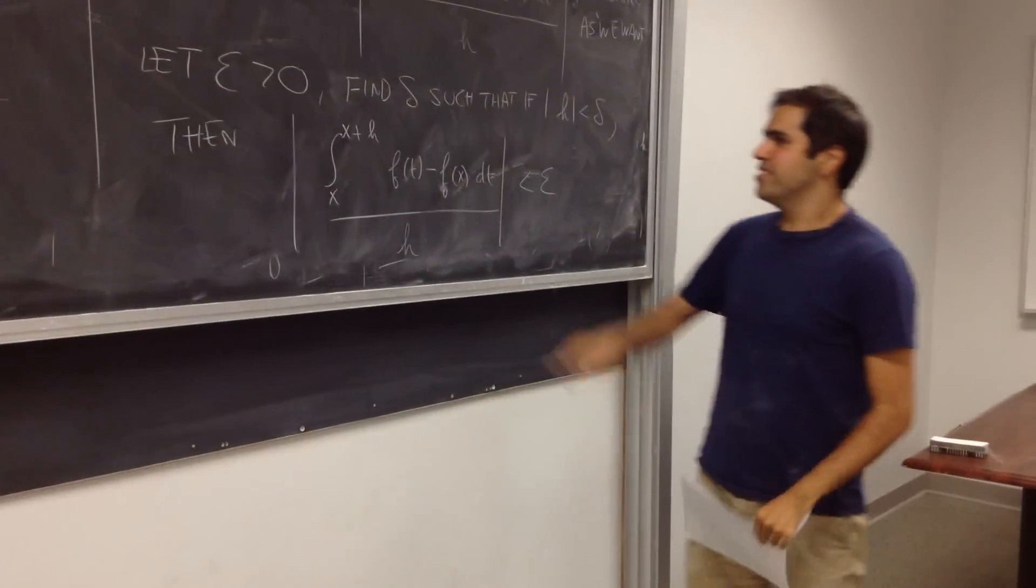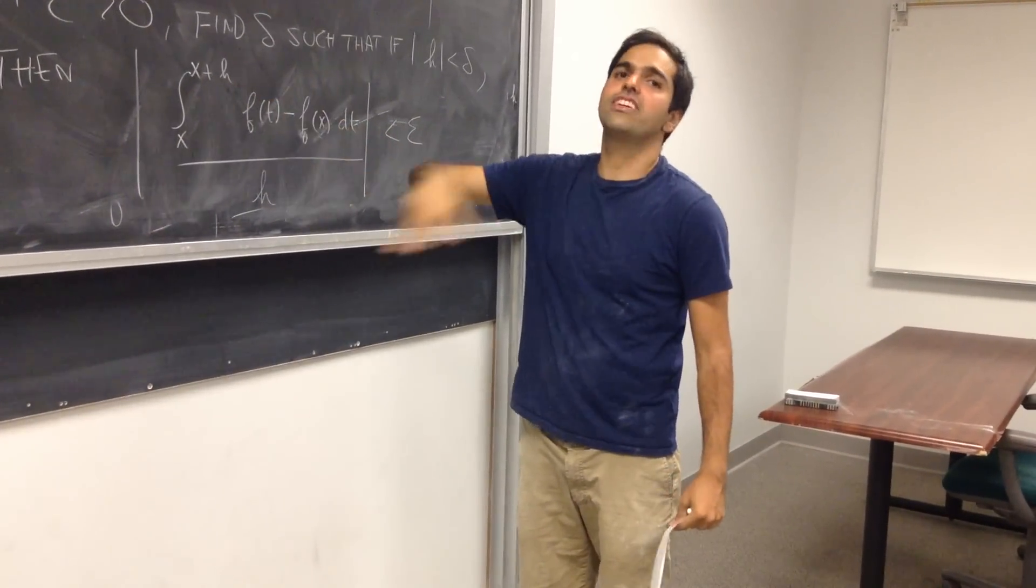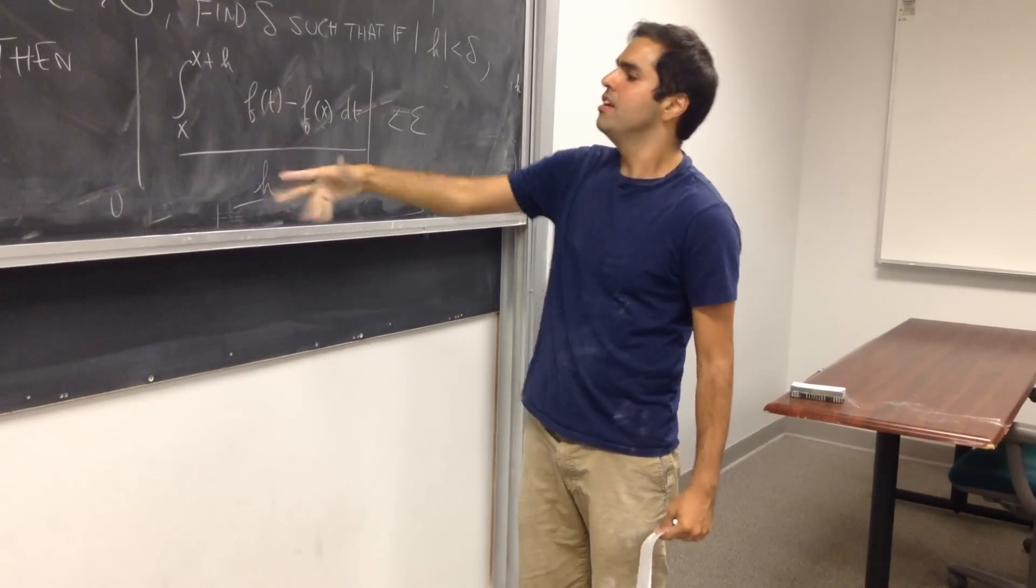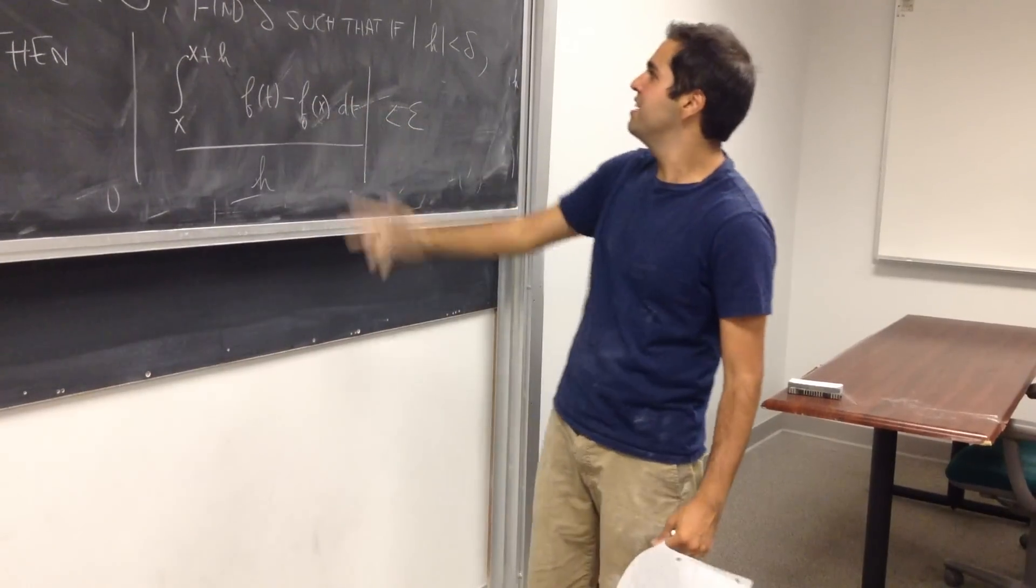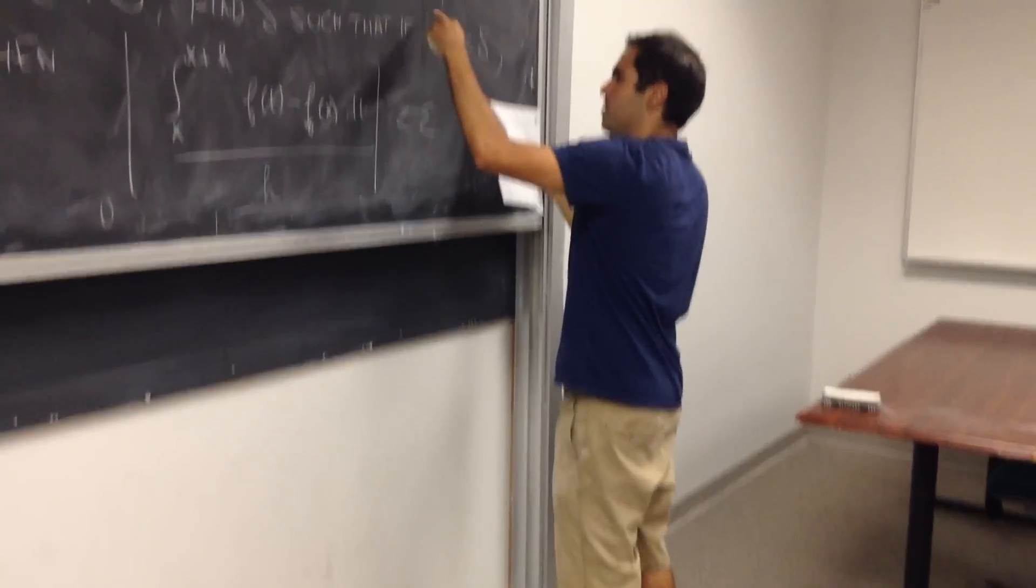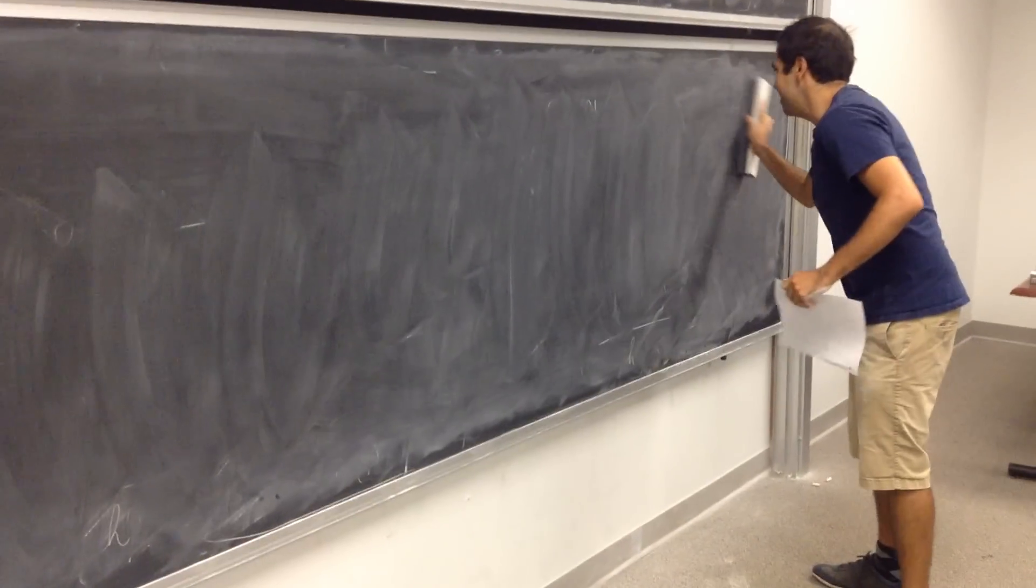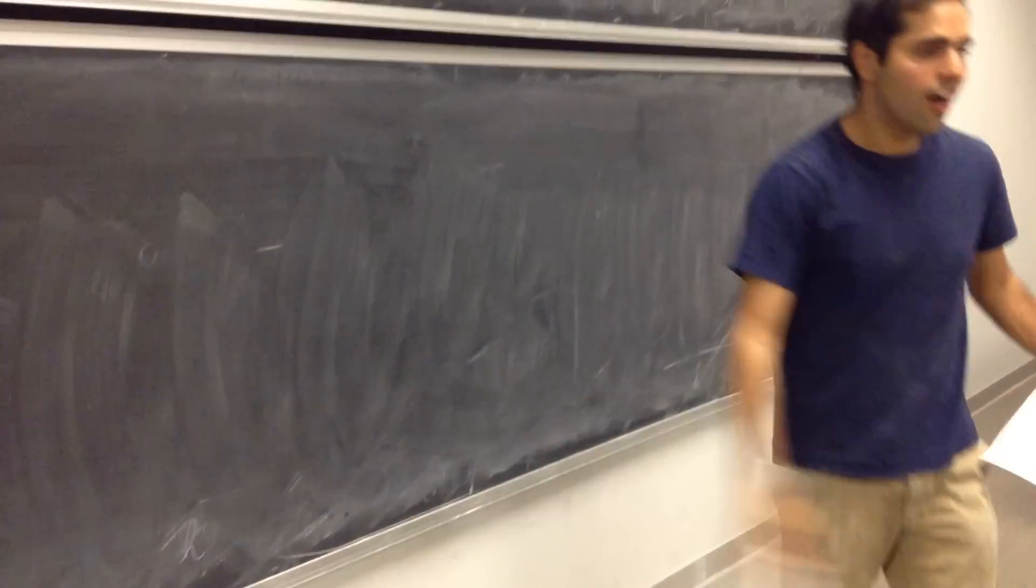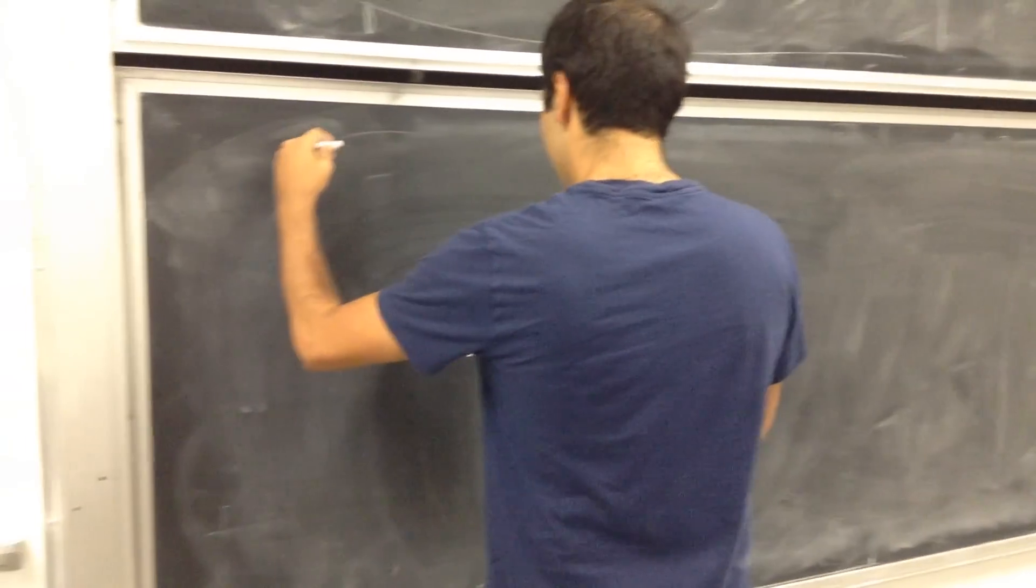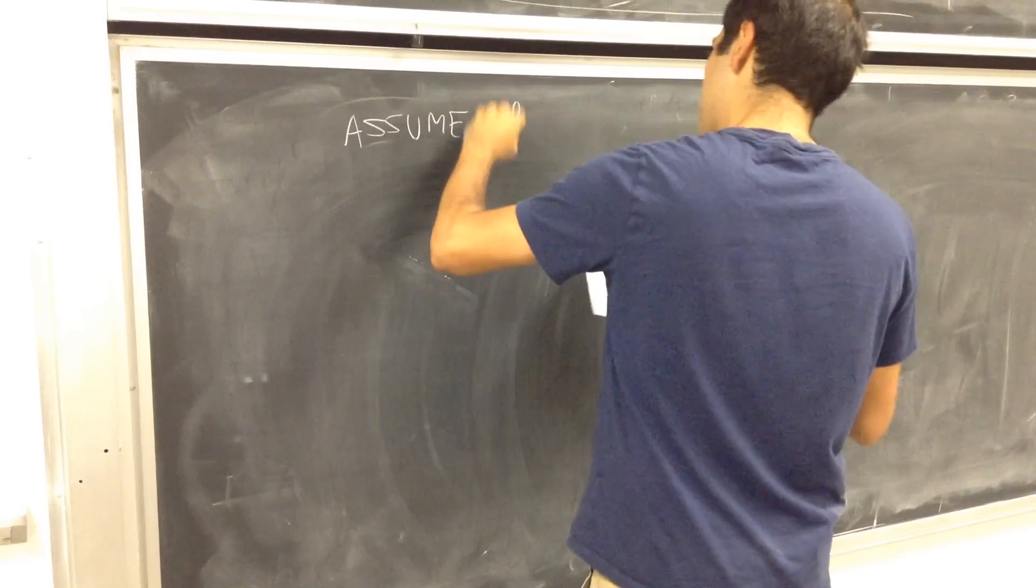One little thing. If h is negative, you can just repeat the whole proof I'm gonna do now with h negative, so from now on, without loss of generality, assume h is positive.